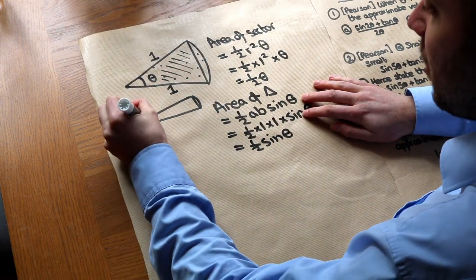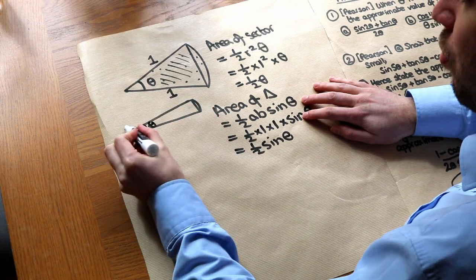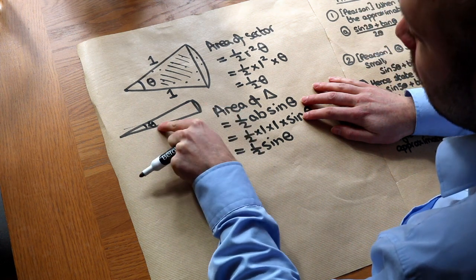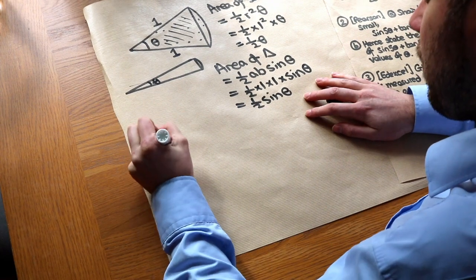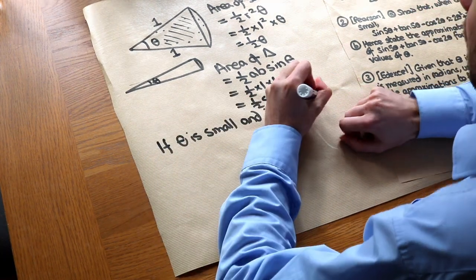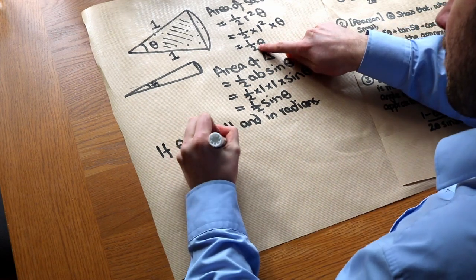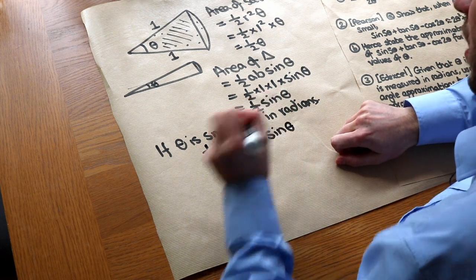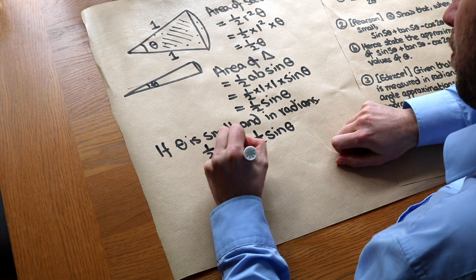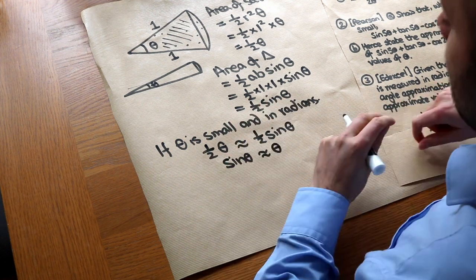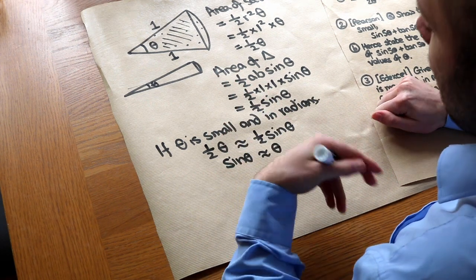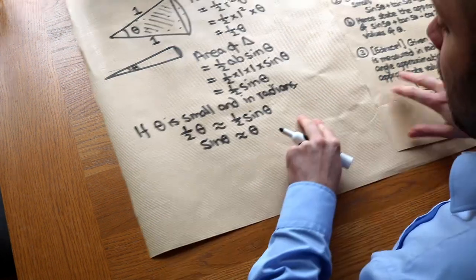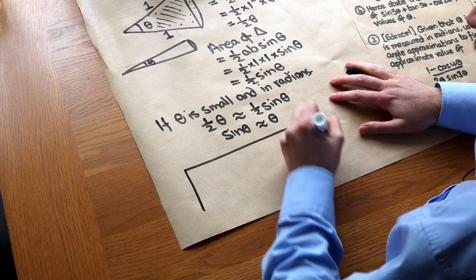As we saw from the diagram, when theta is really small the area of the triangle is approximately equal to the area of the sector. The difference between them is only a tiny little segment, which is almost zero when theta is small. So if theta is small and in radians, ½θ ≈ ½sinθ. Doubling both sides gives sinθ ≈ θ. You can try that on a calculator — put your calculator in radians mode and compute sin(0.001); you'll get pretty much 0.001. And that gives us the first small angle approximation.